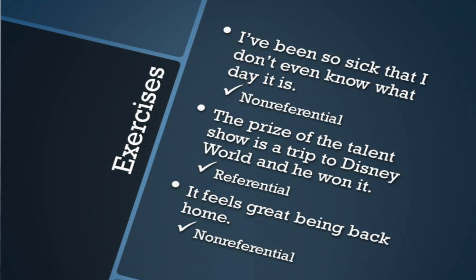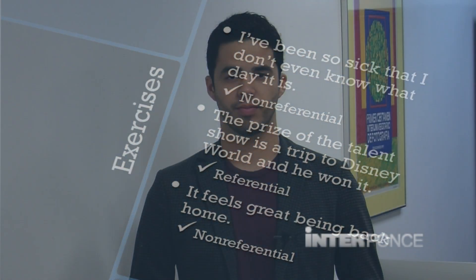The last exercise: 'It feels great being back home.' Here, it's just talking about a feeling, so it's a non-referential it. Now I hope that with these exercises and brief discussion, you have a clearer idea of the uses of the non-referential it and there. But remember, this is just part one, so be on the lookout for part two.